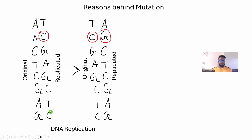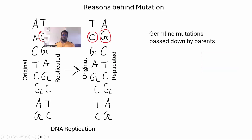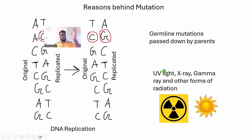After the replicated strand is created it becomes the original strand for the next replication, so this error will keep propagating — and it will go into the protein as well. Another source of mutation is germline mutations passed down by parents. And finally, because our ozone layer is being depleted by greenhouse gases and pollution, UV light from the sun is ever on the rise. X-ray, gamma ray, and other radiation can also induce stress in cells and cause DNA mutations.